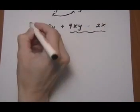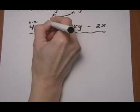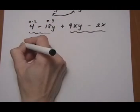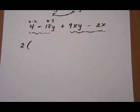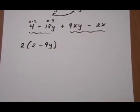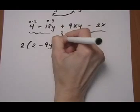For the first ones, 4 is 2 times 2, 18 is 2 times 9, so we have a common factor of 2. And we write the leftovers in parenthesis, 2 take away 9y. And just carry down that plus sign.